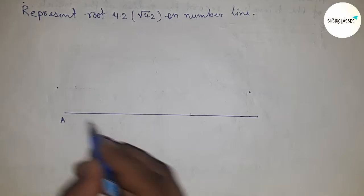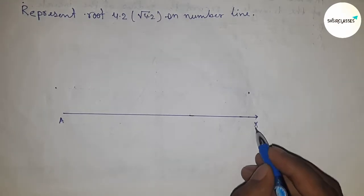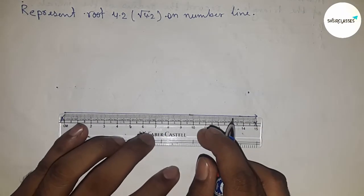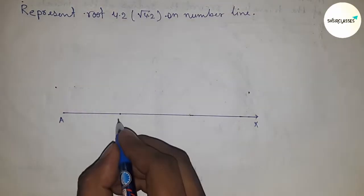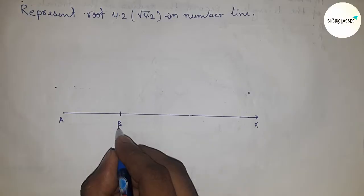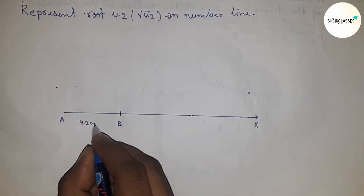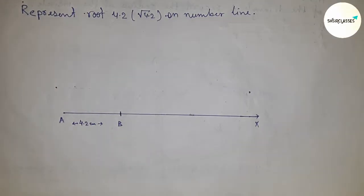The line is AX. Next, using a scale and taking a length of 4.2 by scale, this is point B and this is 4.2 centimeter AB line.